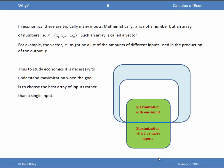In economics, however, there are typically many inputs. Mathematically, x, the input, is not a number, but an array of numbers. It might be n such numbers. If you like, think of two numbers, x1 and x2. And mathematicians call such an array a vector.